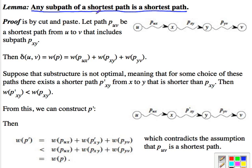So it's the usual cut and paste proof. Let's say this is a path P between u and v is a shortest path that includes these various subpaths, including P_xy. So because this is a shortest path, the weight of that path is also the optimal weight. The delta(u,v) means the weight of the shortest path between them. And because of the way it's constructed here, it's the sum of these three paths.